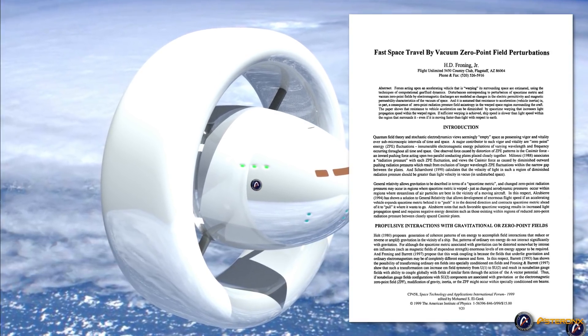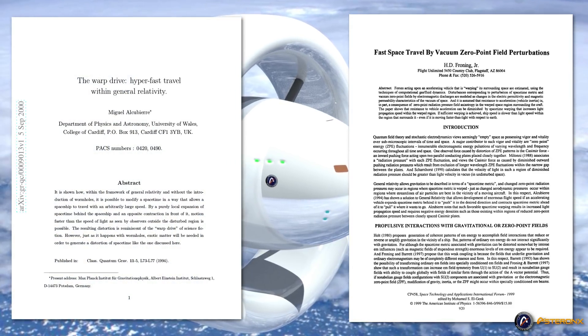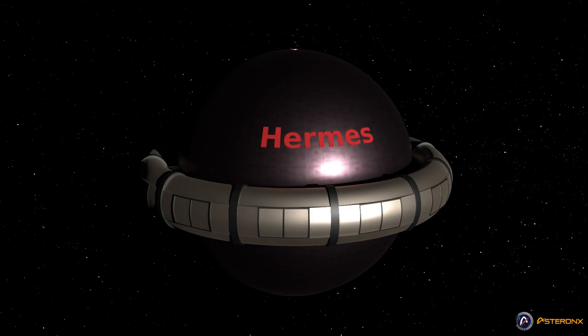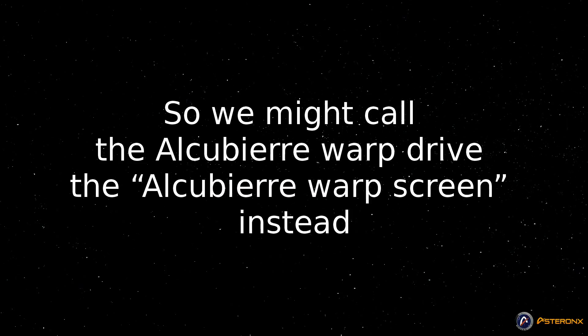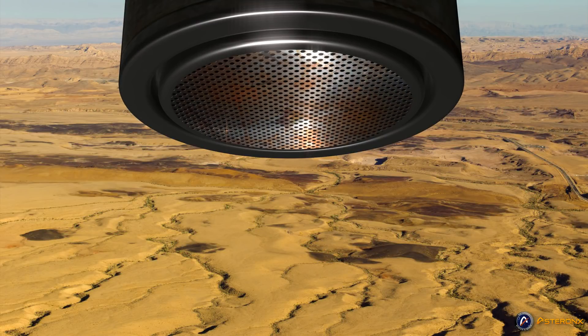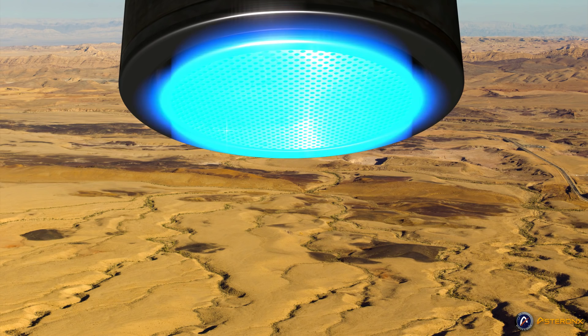Therefore, in conclusion, the Alcubierre drive is not, in fact, a drive per se, but rather a mass and time screen that allows for a much greater acceleration for a given energy input. So we might call the Alcubierre warp drive the Alcubierre warp screen instead. However, perhaps some variant of the drive could be used as a gravitational drive, possibly by means of repelling the ground.